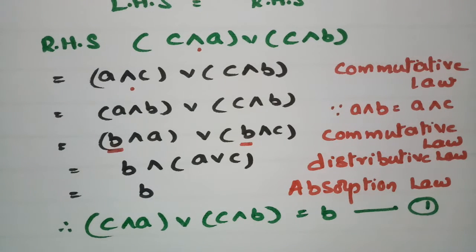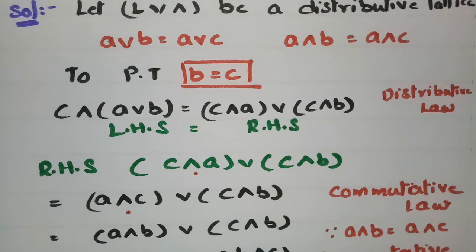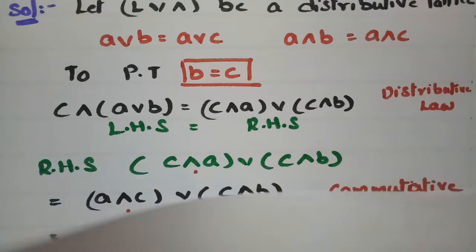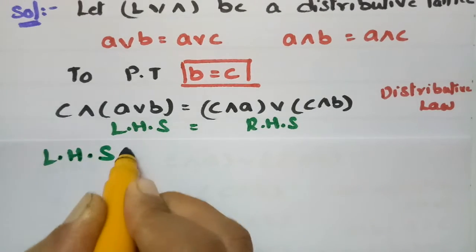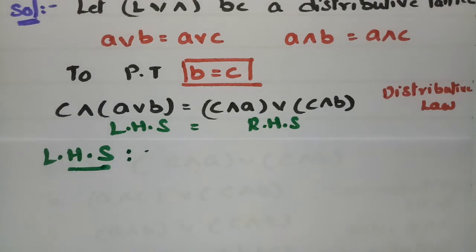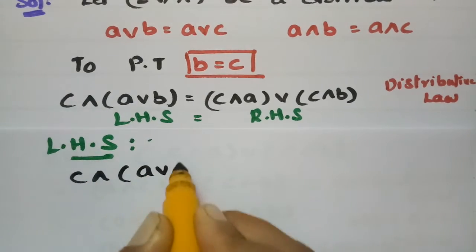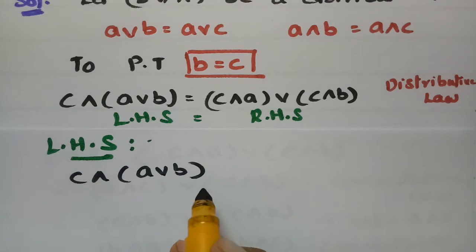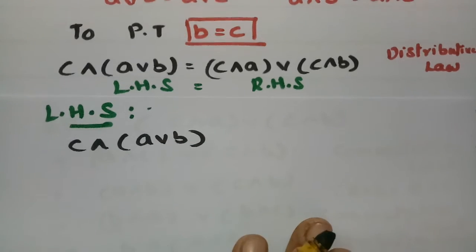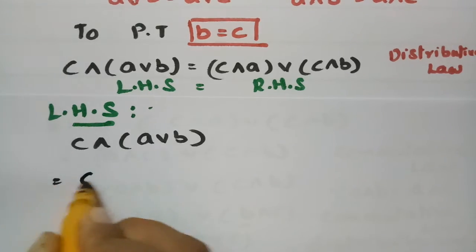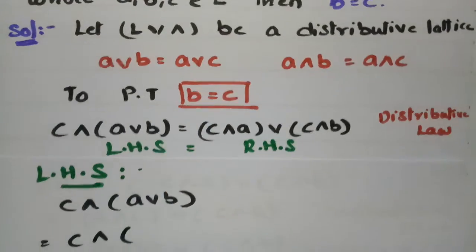Next, we compute the LHS part. The LHS is c∧(a∨b). I will now transform this expression.